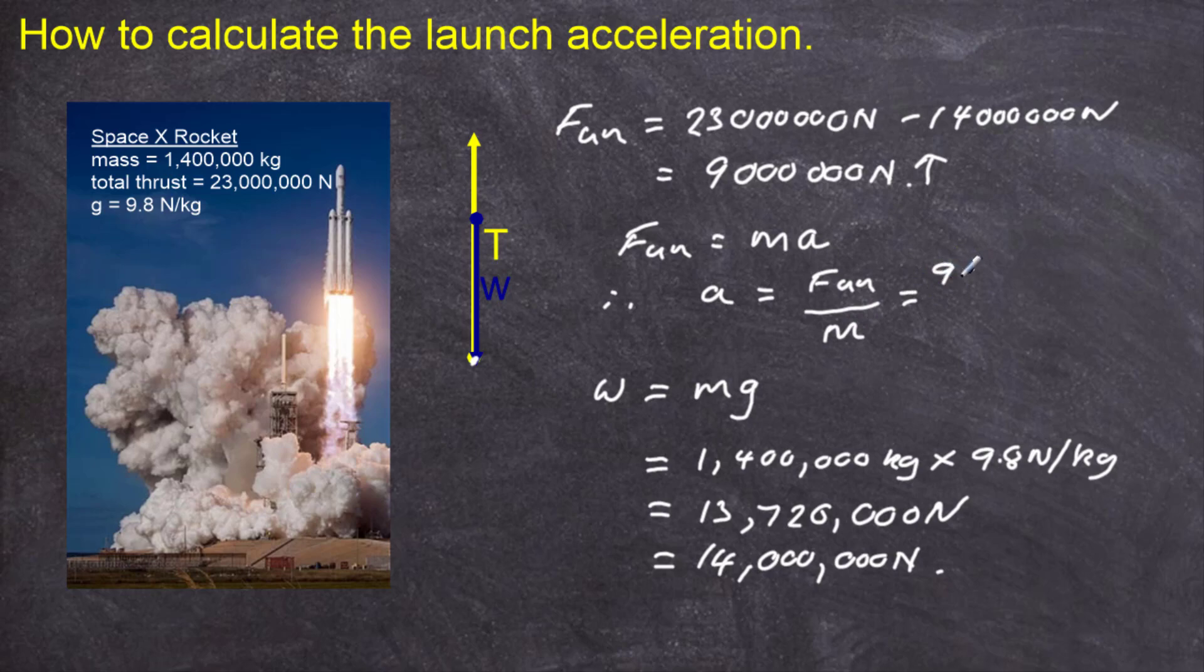And we plug in our numbers now. We have 9,000,000 of an unbalanced force in terms of newtons. And we divide that by the mass of the rocket, which is 1,400,000 kilograms. And if we work that out in my calculator, we get an acceleration equal to 6.4 meters per second every second.